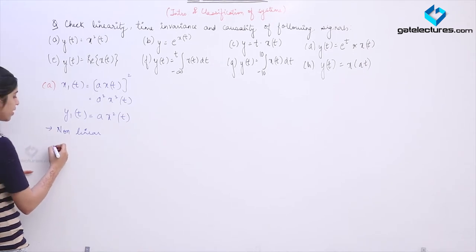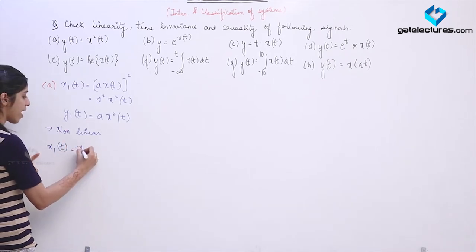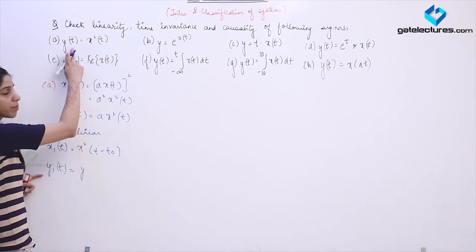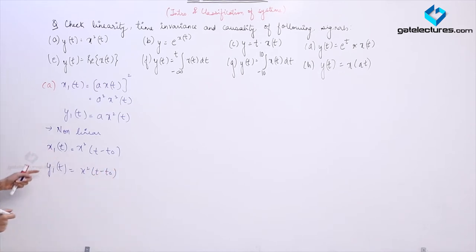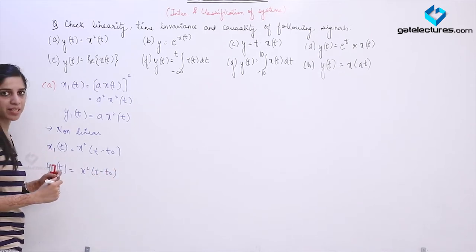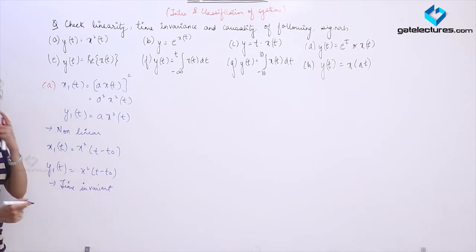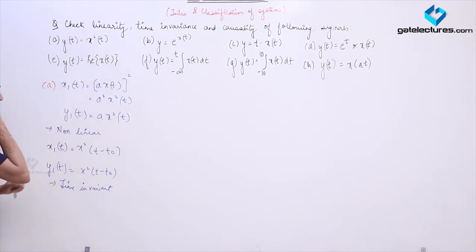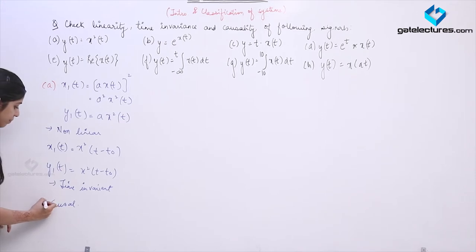Now checking time invariance: considering the time-shifted input x₁(t) = x²(t − t₀), and shifting the output y(t − t₀) by replacing the argument with t₀, we also get x²(t − t₀). Since both are the same, the system is time invariant. Checking causality is very easy — since the system depends only on present values of t, the system is causal. So the given system is non-linear, time invariant, and causal.